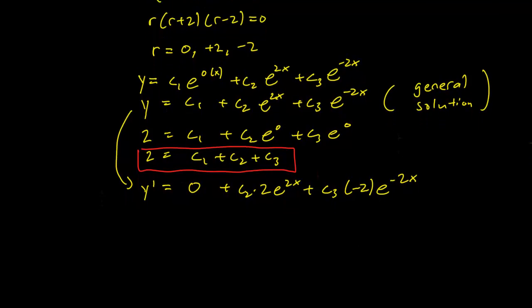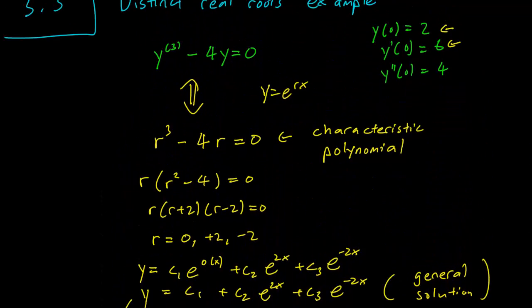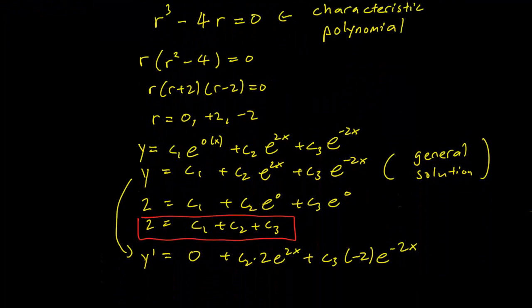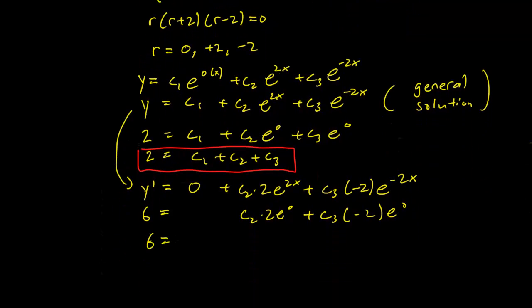And this second equation tells us that when y' is 6, x equals 0. So we can plug that in. 6 = 0 + c₂·2e^0 + c₃·(-2)e^0. And this just is 6 = 2c₂ - 2c₃. And that is the second of our equations involving c₁, c₂, and c₃.